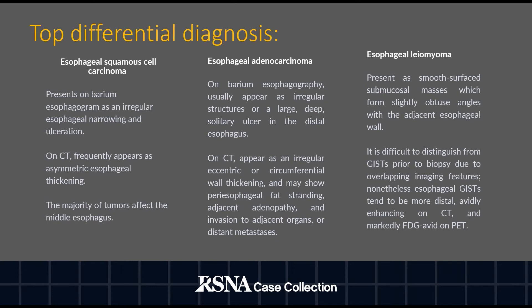Esophageal leiomyoma presents as a smooth surface submucosal mass that forms slightly obtuse angles with the adjacent esophageal wall. It is difficult to distinguish from GIST prior to biopsy due to overlapping imaging features. Nonetheless, esophageal GIST tends to be more distal, avidly enhancing on CT, and markedly FDG-avid on PET.